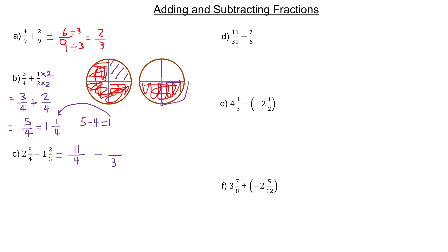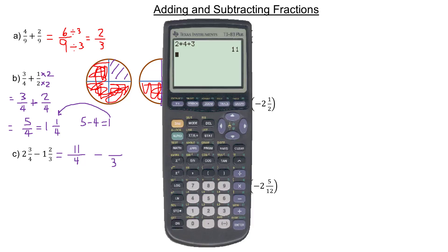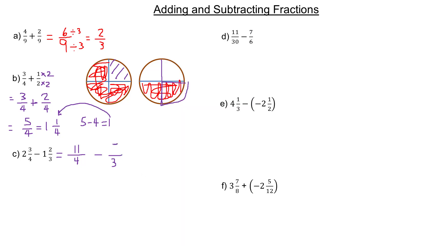The next one is one times three plus the two. Using the calculator: one times the three denominator plus the two numerator on top — this will be five-thirds.